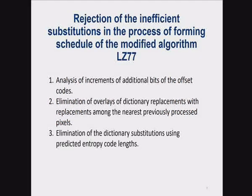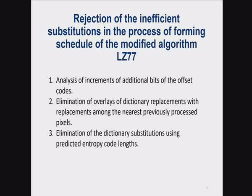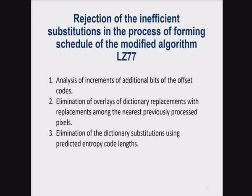As mentioned above, the modified schedule of the LZ77 algorithm should be formed in two passes: the first to look for replacements among the nearest previously processed pixels, and the second to find replacements in the dictionary for those pixel components that are not replaced by the first pass. We considered the algorithm for rejection of inefficient generating substitutions of the modified LZ77 schedule in last year's report. In this article, we suggest substantiating the option for refusing extended replacements in the process of forming a modified LZ77 schedule, which predictably increases the length of the code.